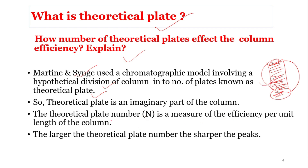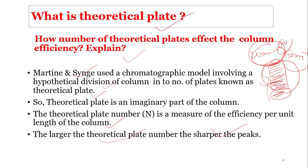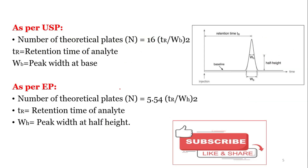The theoretical plate number is a measure of the efficiency per unit length of the column. It depends upon the length of the column — whether it is a 250 mm, 100 mm, or 150 mm column. The higher the column length, the higher the theoretical plate number, and the higher will be the efficiency. The larger the theoretical plate number, the sharper the peaks.